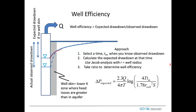Many wells are affected by a well skin, a low permeability layer that surrounds the well and causes the drawdown in the skin to be greater than the drawdown that would be expected otherwise. We can see this in the sketch. This line here is the expected drawdown using the Jacob analysis, but as we get right in the vicinity of the well, we see there's a low permeability zone and the head follows this dashed line.